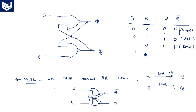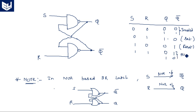When both S and R are 1, the output holds the previous state — either 0,1 or 1,0 depending on the previous state. This condition is the holding period, meaning the output retains whatever it was before.